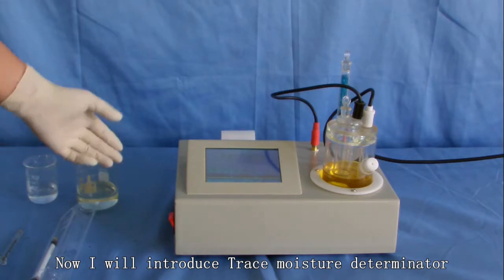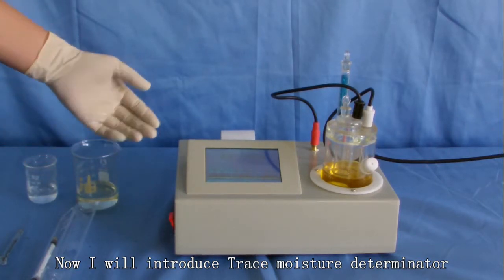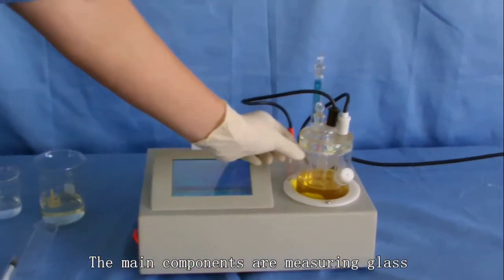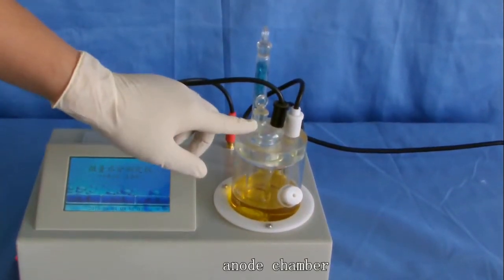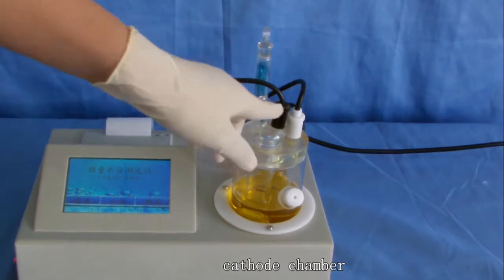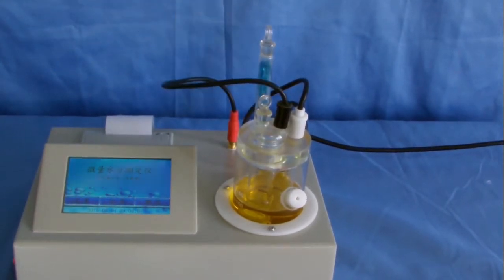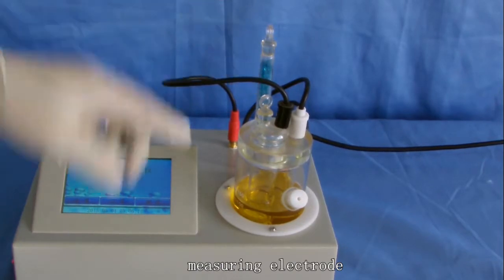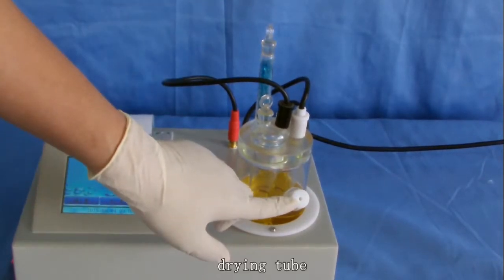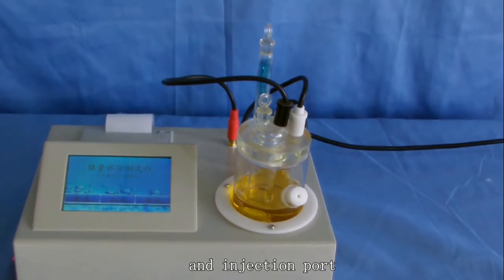Now I will introduce Trace Moisture Determinator. The main components are marring glass, anode chamber, cathode chamber, electrolysis electrode, marring electrode, drying tube, and injection port.